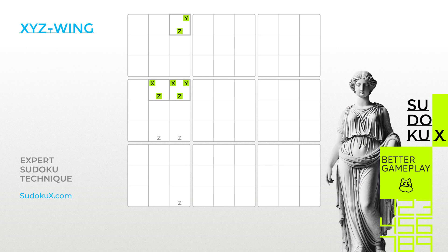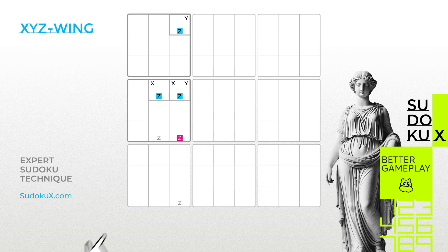This third number, which could end up in any of the three involved cells, can be eliminated from cells that intersect between the pivot and the pincers. As a result, the XYZ Wing always operates across two blocks. Generally, the XYZ Wing provides fewer elimination opportunities compared to the Y-Wing.